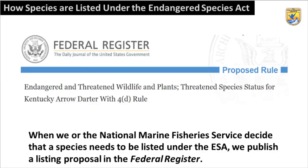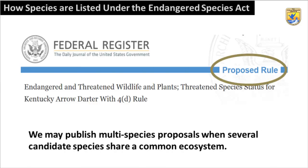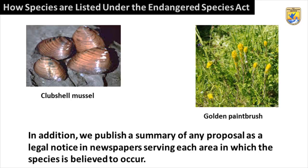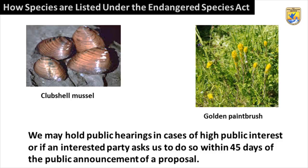When we or the National Marine Fisheries Service decide that a species needs to be listed under the ESA, we publish a listing proposal in the Federal Register. We may publish multi-species proposals when several candidate species share a common ecosystem. To promote awareness of a proposal, we issue news releases, conduct special mailings, and inform the scientific community and other federal and state agencies. In addition, we publish a summary of any proposal as a legal notice in newspapers serving each area in which the species is believed to occur. We may hold public hearings in cases of high public interest, or if an interested party asks us to do so within 45 days of the public announcement of a proposal.